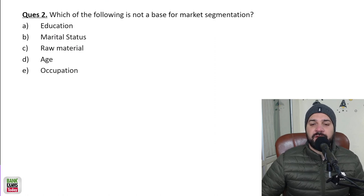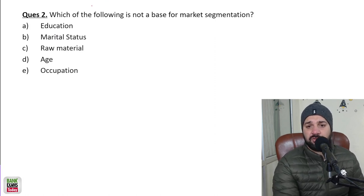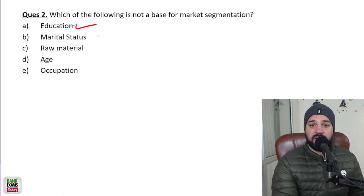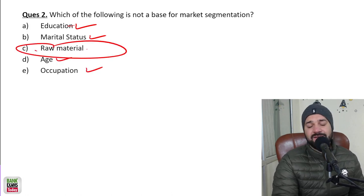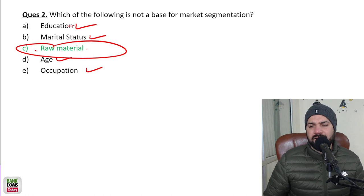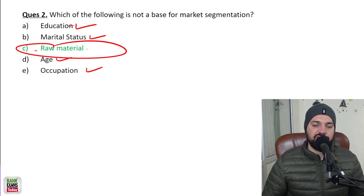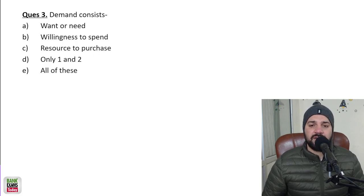Question: Which of the following is NOT a base for marketing segmentation? The options are education, marital status, age, occupation, and raw material. Education, marital status, age, and occupation are all demographic factors. Raw material is not related to segmentation — that is the correct answer.